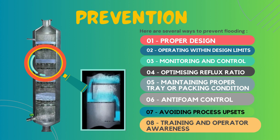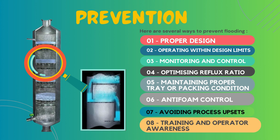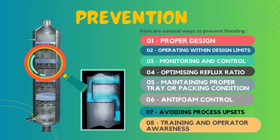The fourth way to prevent flooding in a distillation column is optimizing the reflux ratio. Adjusting the reflux ratio helps to maintain the desired separation efficiency while avoiding excessive liquid buildup in the column. It is necessary to have an optimum or balanced reflux ratio, which helps maintain the proper equilibrium between the vapor and liquid phases and prevents flooding.